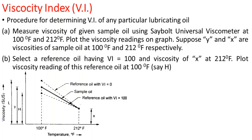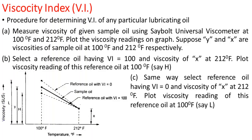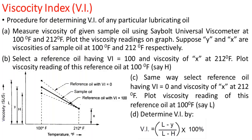Next, select a reference oil having viscosity index 100 and viscosity X at 212°F, and plot its viscosity reading at 100°F — call this H. Similarly, select a reference oil with viscosity index 0 and viscosity X at 212°F, plot its reading at 100°F — call this L. Then determine the viscosity index as: (L minus Y) divided by (L minus H), multiplied by 100%.